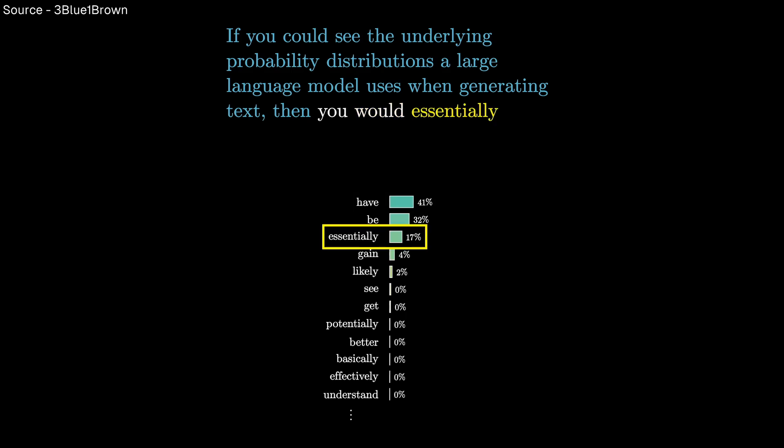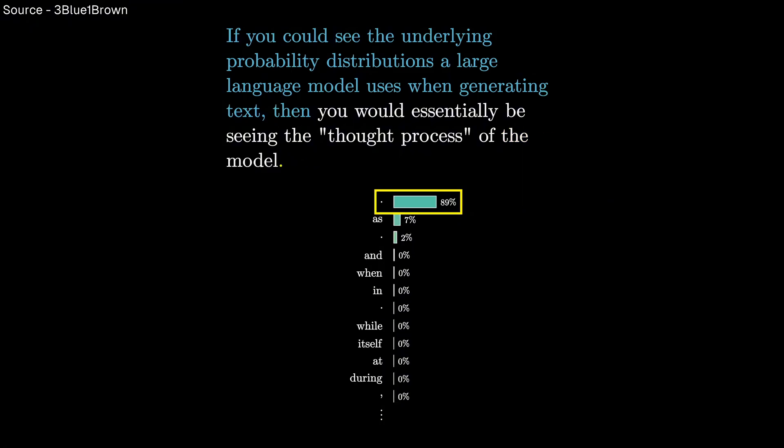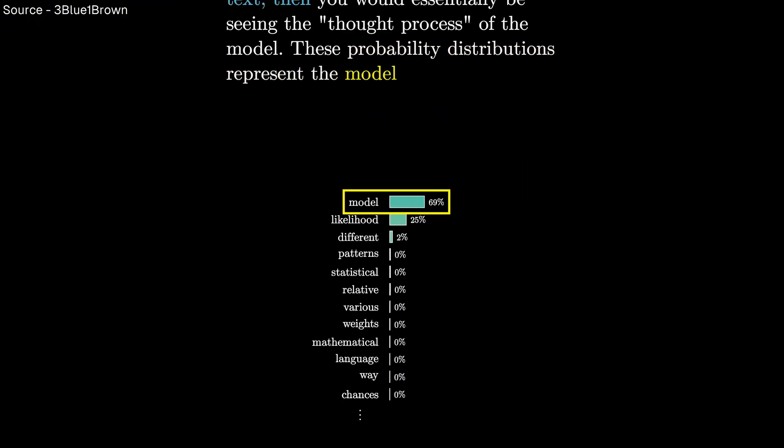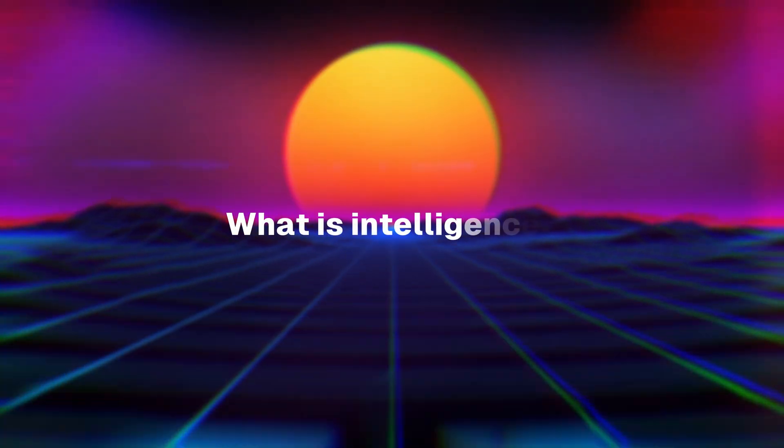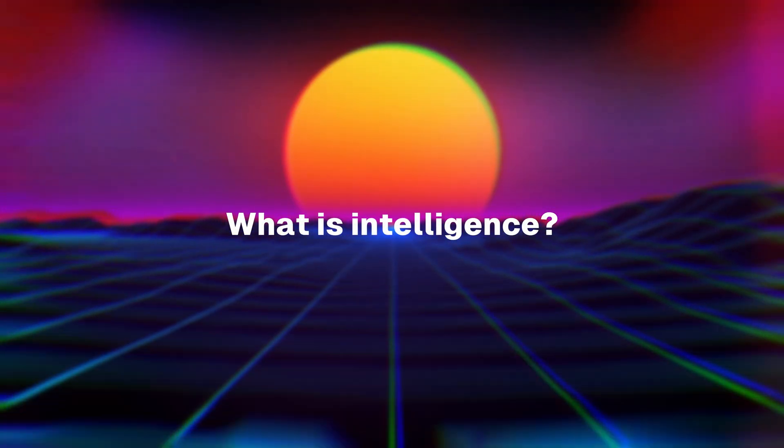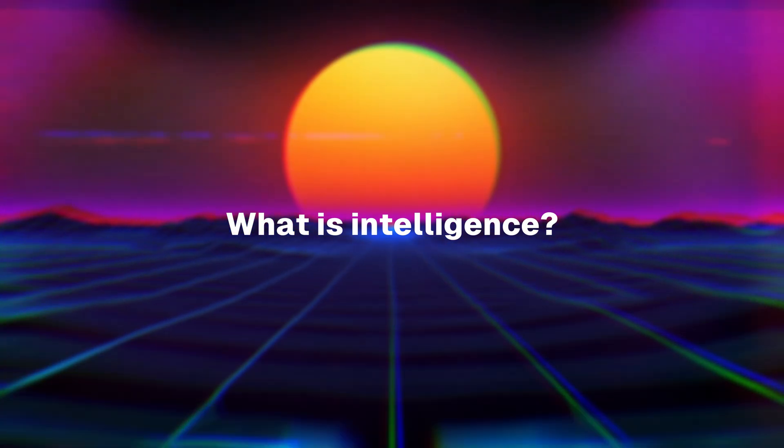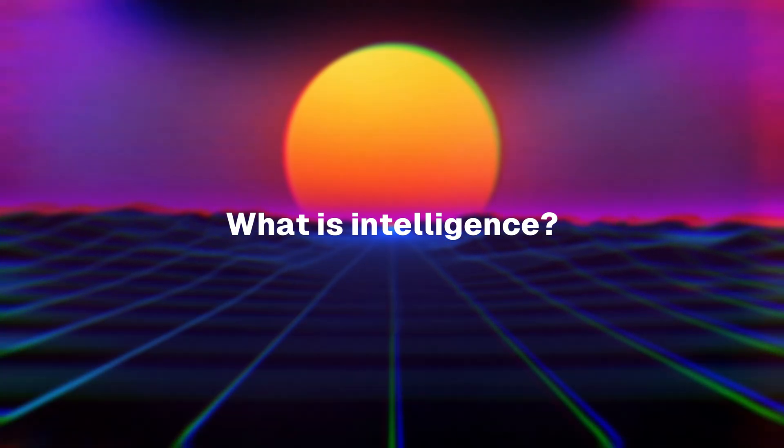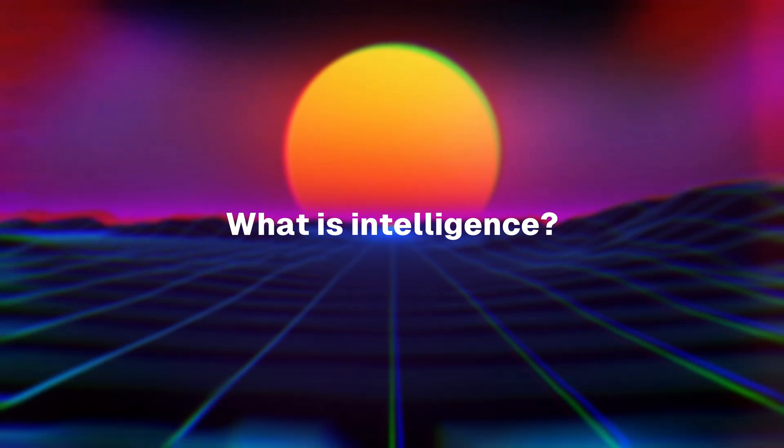Yet there's something humbling about this perspective. Rather than intelligence being some magical essence we need to decode, it might be an emergent property of large-scale information processing. This doesn't make it any less remarkable. In fact, it might make it more so. Just as the complexity of life emerged from simple chemical processes, the richness of intelligence might emerge from simple learning rules applied at scale.